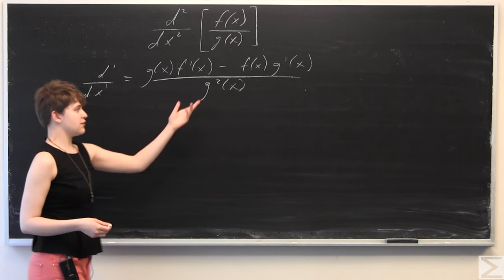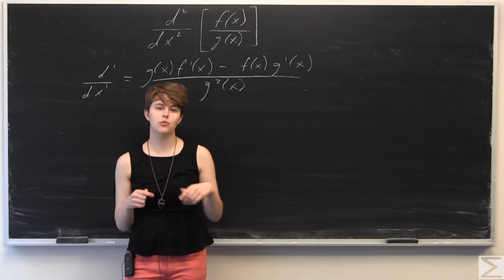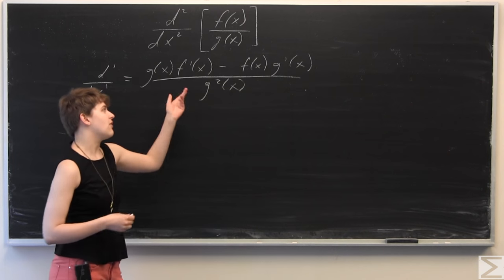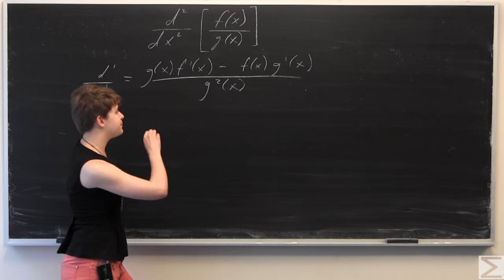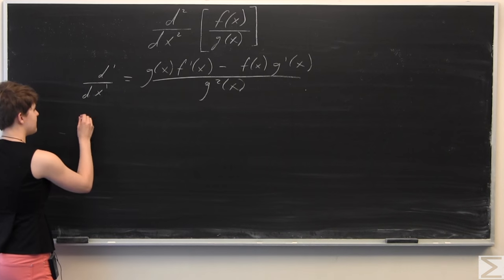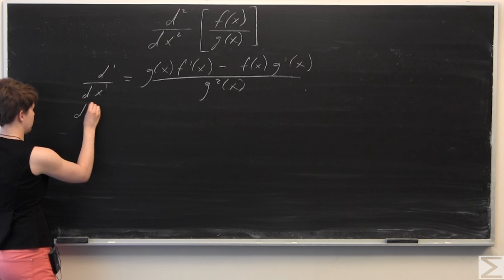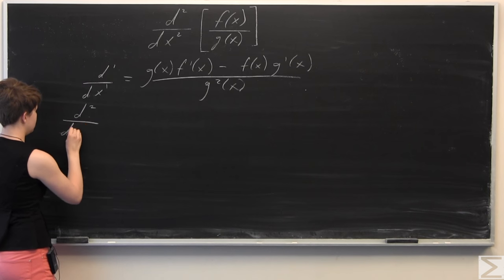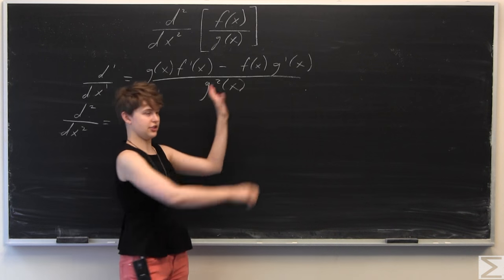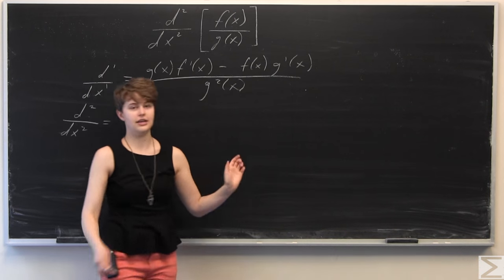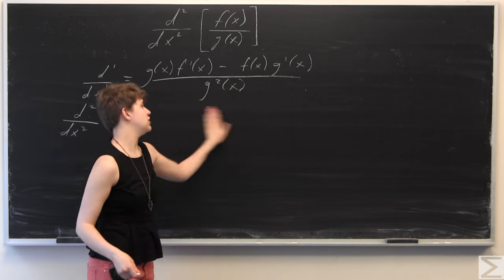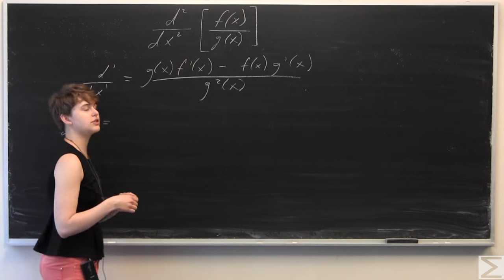This is just the quotient rule applied one time, but we're going to apply the quotient rule a second time now to find an expression in terms of f(x) and g(x) for the second derivative with respect to x — d²/dx². We're going to use the quotient rule again, but now we have lots of other functions inside that need to be differentiated. We're going to use product rule, chain rule, and implicit differentiation in order to find an expression for the second derivative.